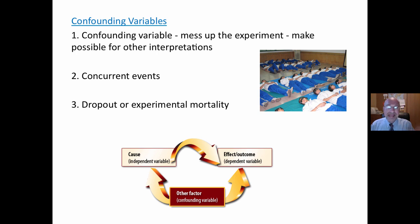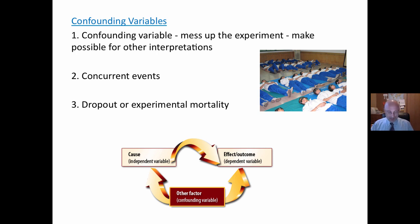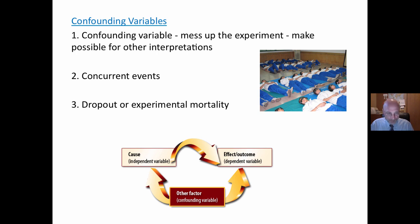Confounding variables. When we analyze and evaluate research studies, we have to think about what might be messing up the experiment or make it possible to interpret that research study differently. The first one is concurrent events. These are things happening at the same time outside the experiment that mess up the experiment or may be the cause of the outcome. Another confounding variable is dropout, or experimental mortality. This is when the subjects of a study drop out while it is in progress, and that can affect the outcome.